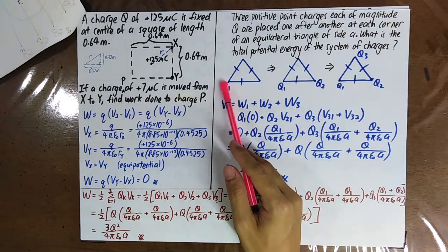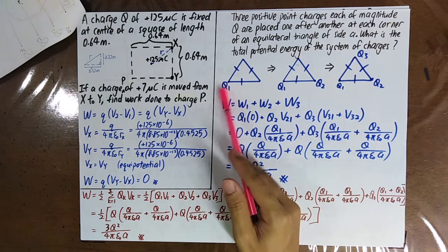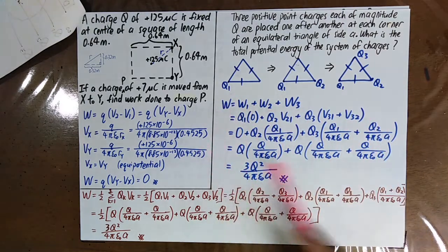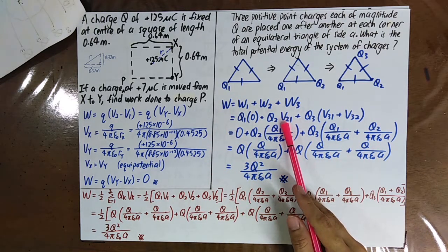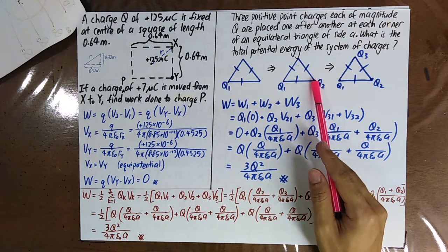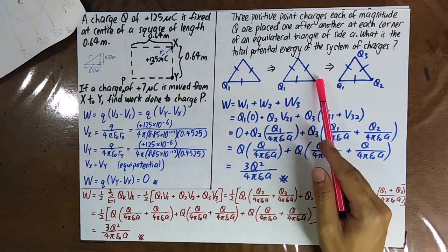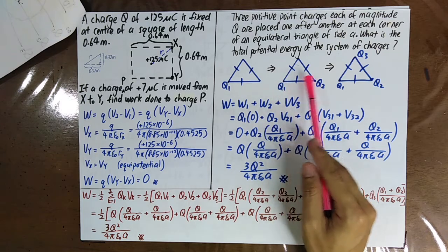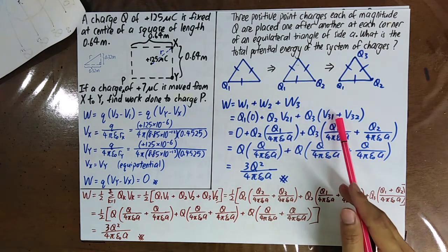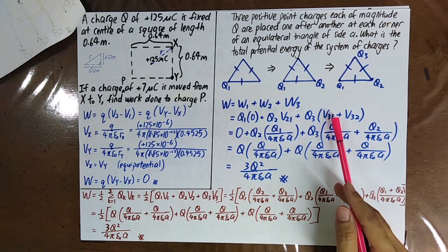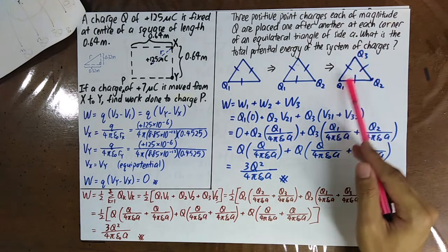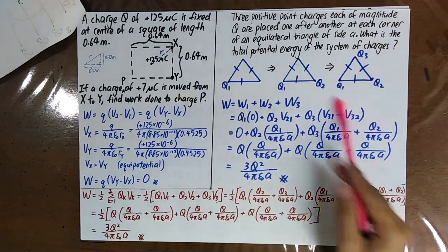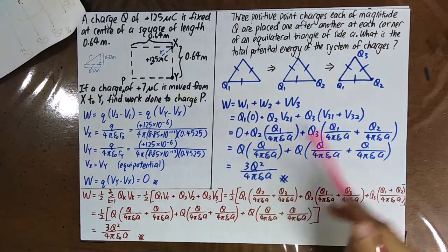Assume you bring charge q1 first, then q2, then q3. The potential at point p2 due to q1 is q1 over 4πε₀a, where a is the distance between them. V31, the potential at point 3 due to charge q1, is also q1 over 4πε₀a. Using this formula gives you the total potential energy of the system.